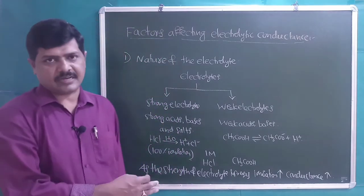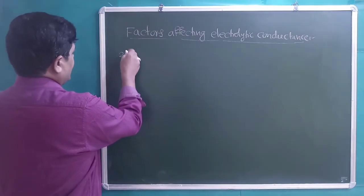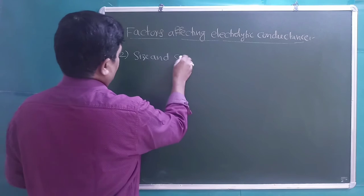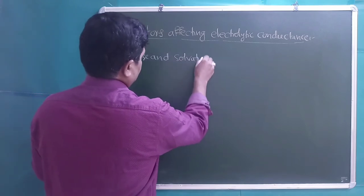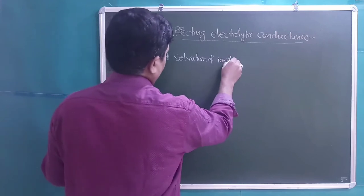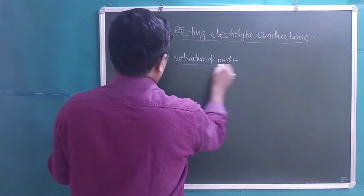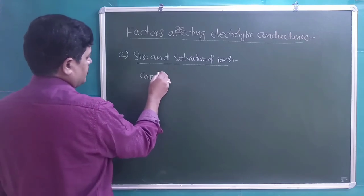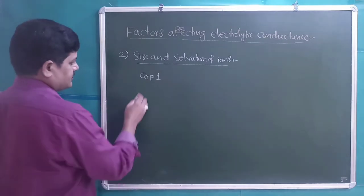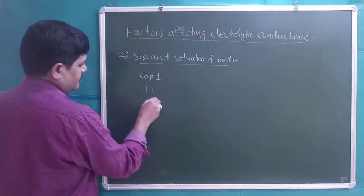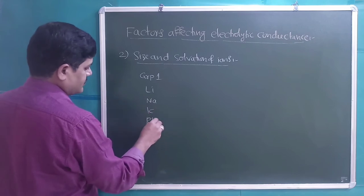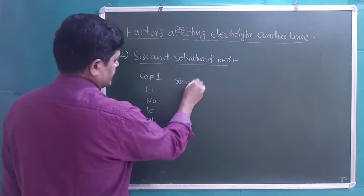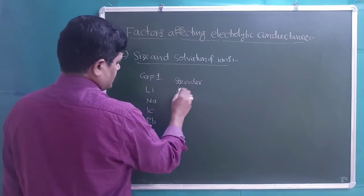The second factor is the size and solvation of ions. For example, if we take Group 1 elements — lithium, sodium, potassium, rubidium, and cesium — the size order of Group 1 metal cations in the gaseous state is: Li⁺ < Na⁺ < K⁺ < Rb⁺ < Cs⁺. Down the group, size increases in the gaseous state.